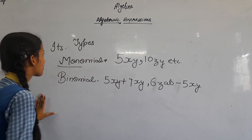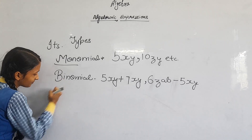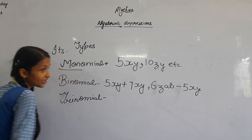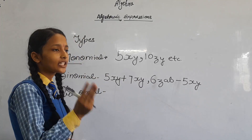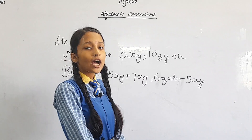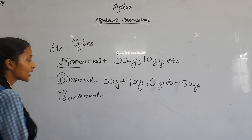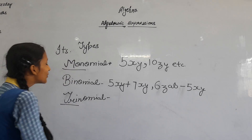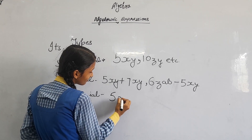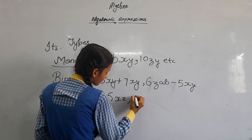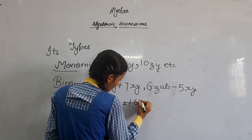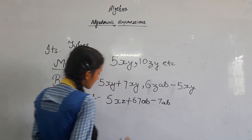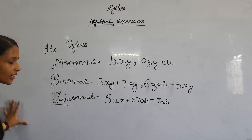And the next type is trinomial. The algebraic expression which contains only three terms is known as trinomial. Tri means three, so the algebraic expression which contains only three terms is known as trinomial. Here we see there are three terms, so it is known as trinomial.